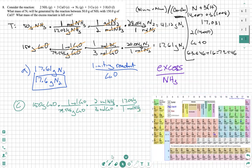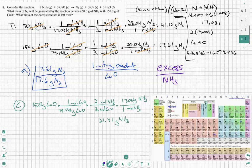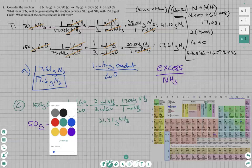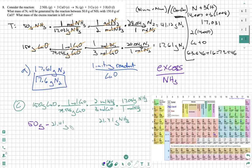We plug that into our calculator — 150 times 2 times 17.031, divided by 79.546 times 3 — and we get 21.41 grams of NH3. This is how much NH3 is used in the reaction. To find the excess, we take our initial amount given minus the amount that will be used: 50 minus 21.41 equals 28.59 grams of NH3 remaining.